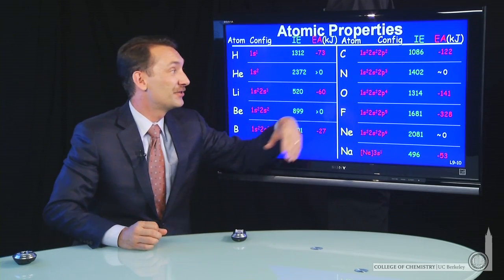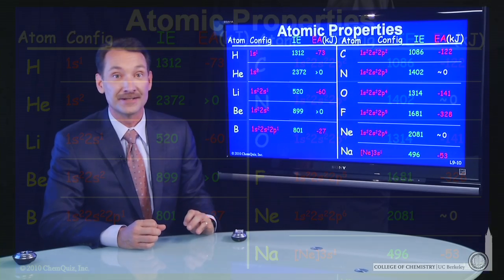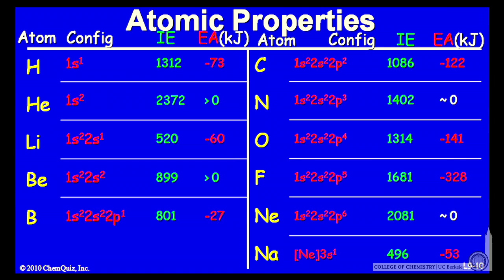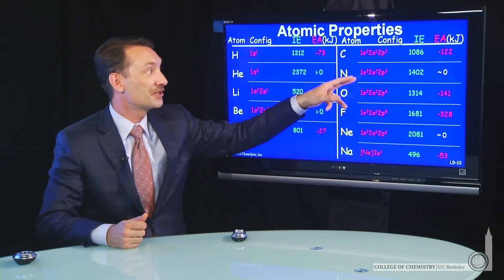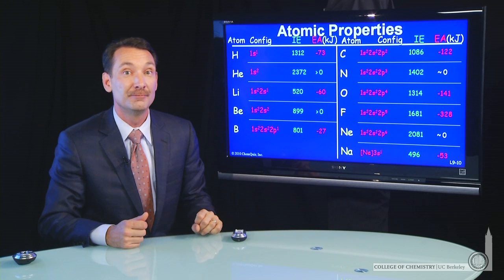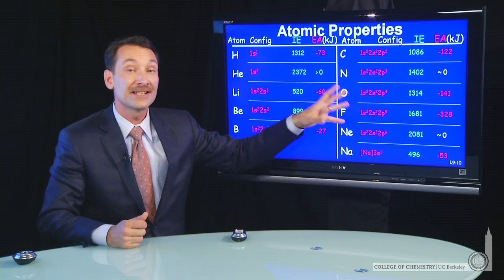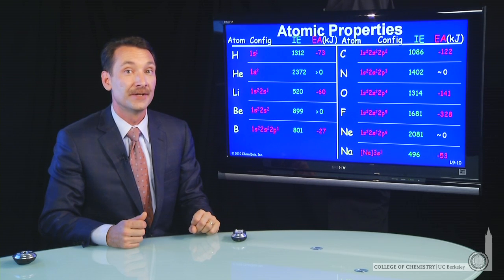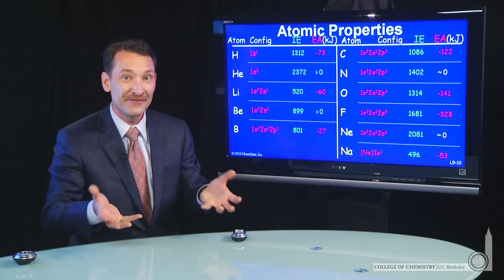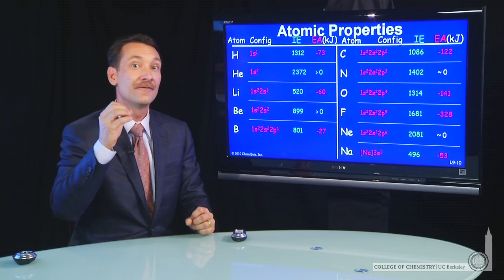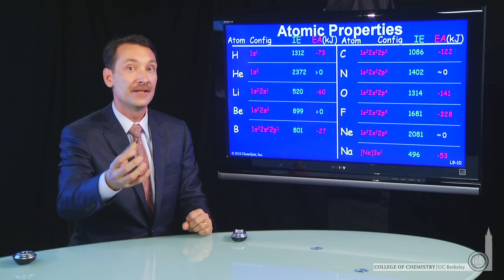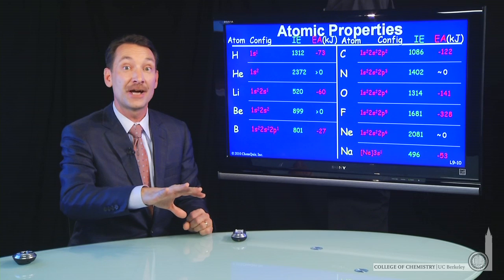In some cases — nitrogen and neon, for instance — you can see it's around 0. That is, nitrogen and neon are rather indifferent as to whether they'll accept an electron. And we can see why: nitrogen having a half-filled P shell and neon having a full P shell are less likely to accept electrons. So there is a stability in half-filled shells and full shells that's different from their half or less filled counterparts.